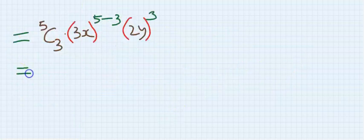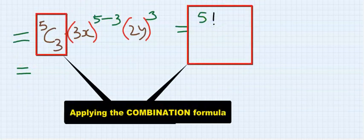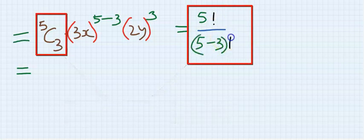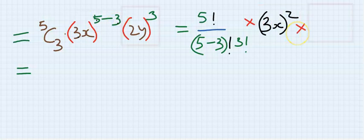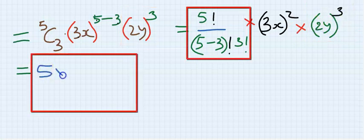Step four: solve this completely and choose our answer. We have 5 factorial over (5 minus 3) factorial times 3 factorial, multiplied by (3x) to the power of 2 and (2y) to the power of 3. The numerator is 5 times 4 times 3 times 2 times 1.